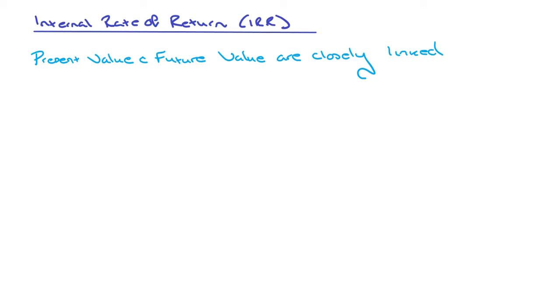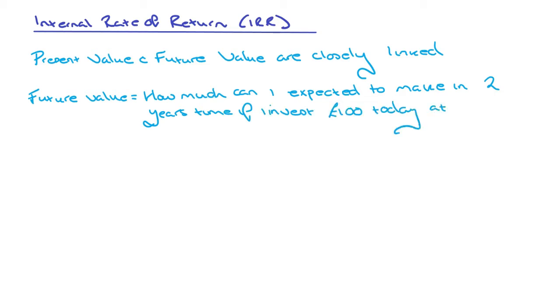In order to understand internal rate of return, we need to understand the difference between present value and future value. The two are very closely linked. Future value is how much can I expect to make in a certain amount of time in the future if I was to invest, say, £100 today. If I invest £100 at a rate of return of 2% per annum, then I can expect that my £100 would be worth £102 by the end of year one, and that would be its future value.